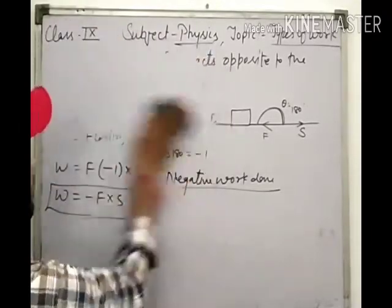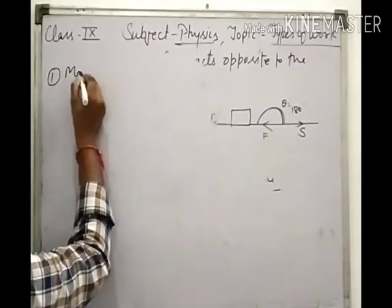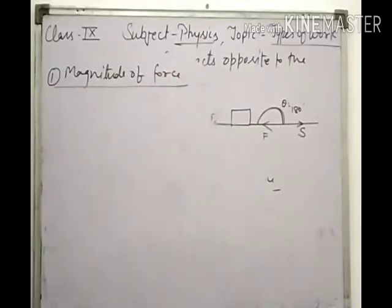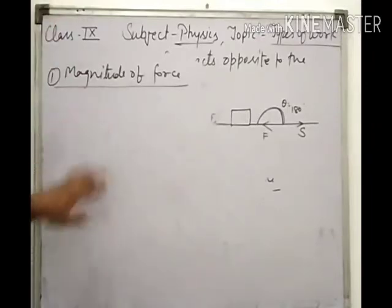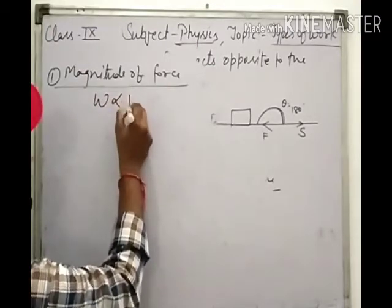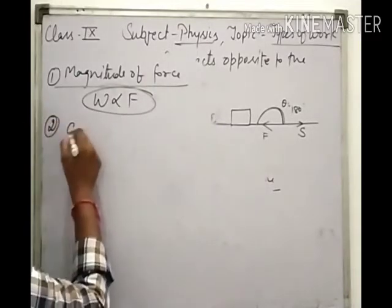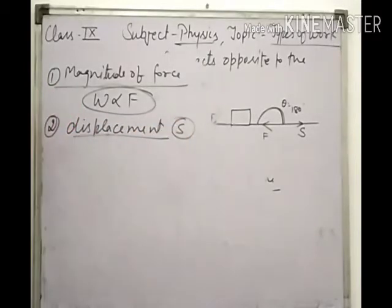Now if we are asked which factors does work done depend on, there are three factors. The first factor is the magnitude of force. The greater the magnitude of force you apply, the greater the work done. The lesser the force applied, the lesser the work done. So work done is directly proportional to the force — the magnitude of the force.